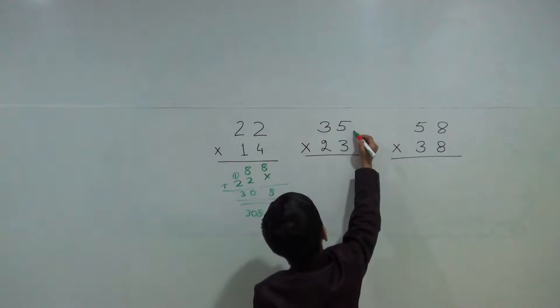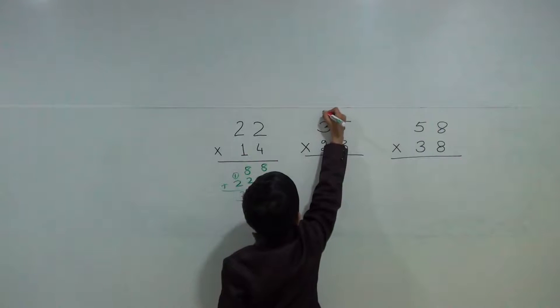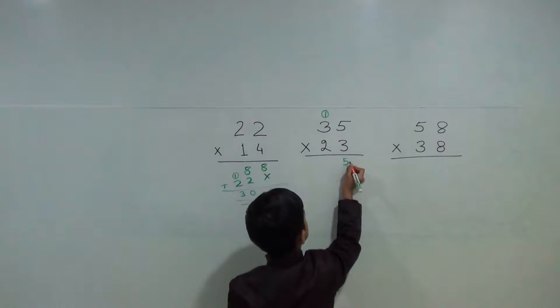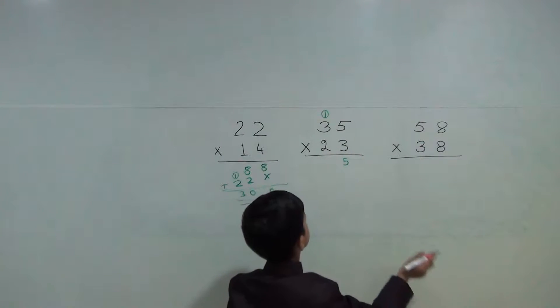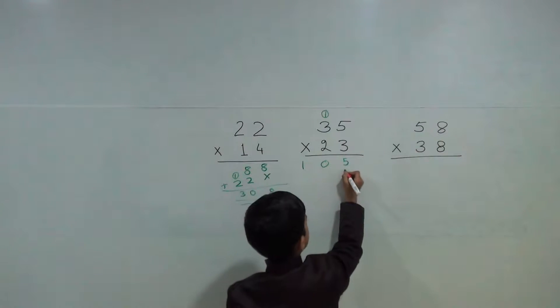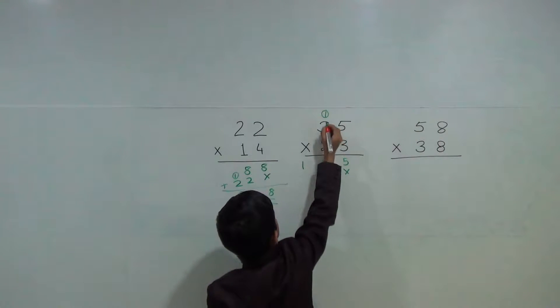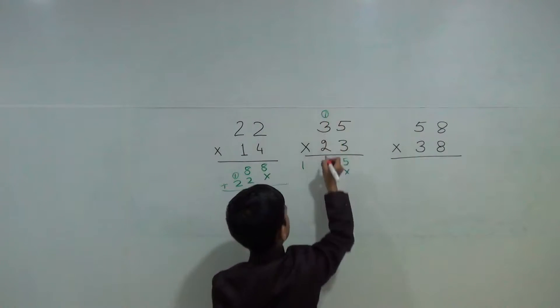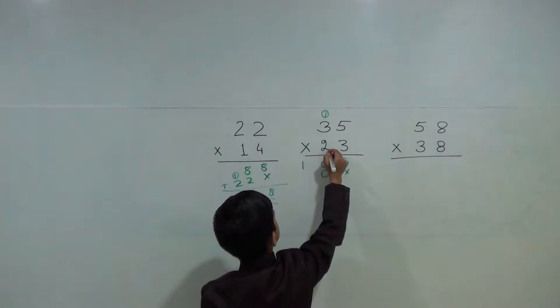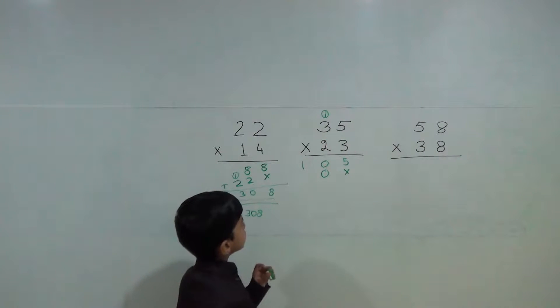Now 3 times 5 are 15. 1 carry over and 5 down. Then 3 times 3 are 9. 9 plus 1 is 10. Now cross and again 10. So 1, 0. Then 2 times 3 are 6. 6 plus 1 is 7.